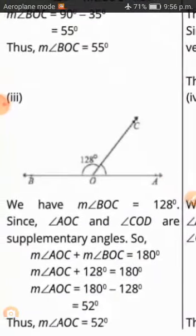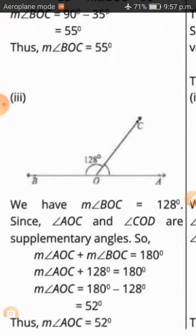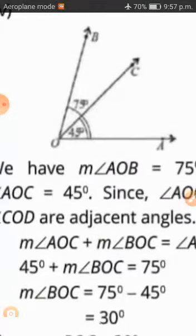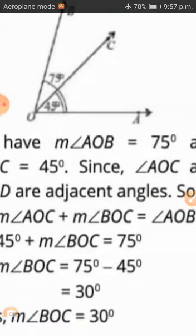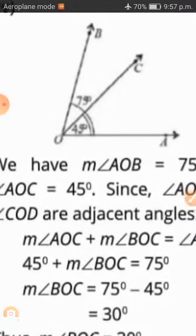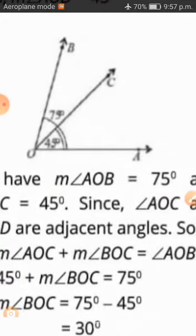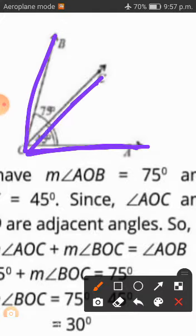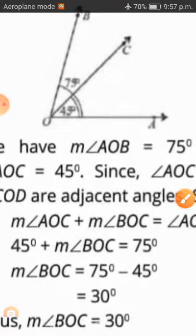Question Number 3: We have BOC equal to 128 degrees, and AOC and COD are supplementary angles, so we have straight lines. We also have AOB equal to 75 degrees and AOC equal to 45 degrees. Since AOC and COB are adjacent angles, AOC plus BOC equals AOB. We put 45 for AOC, BOC is missing, and 75 on the other side — so 75 minus 45 gives BOC equals 30 degrees.